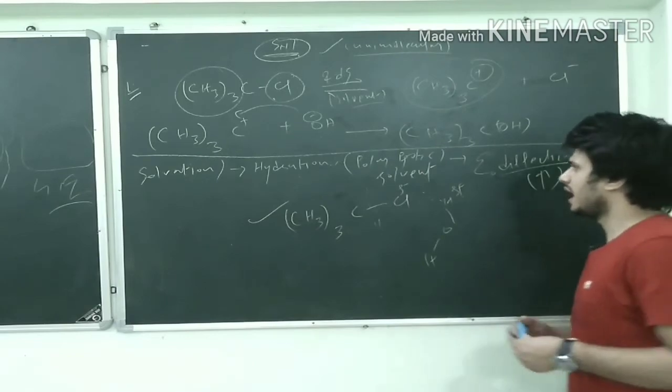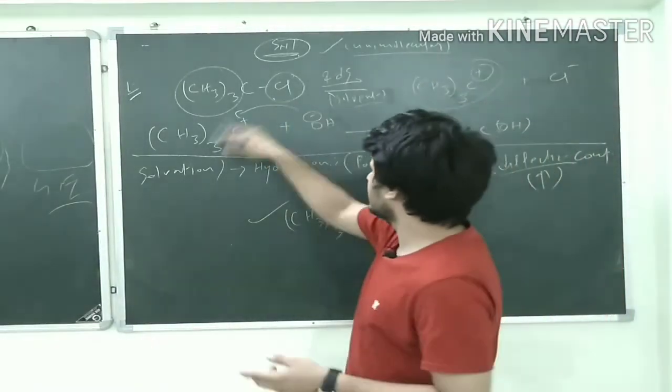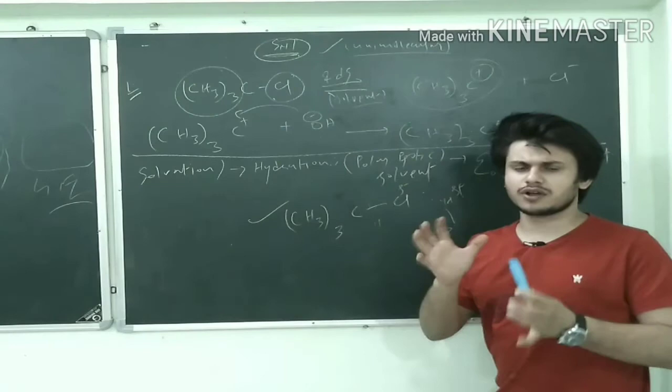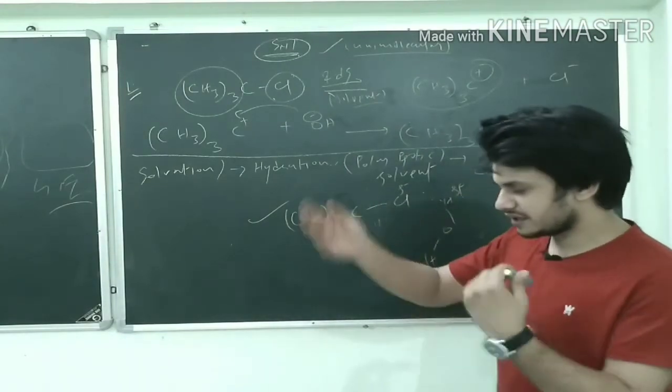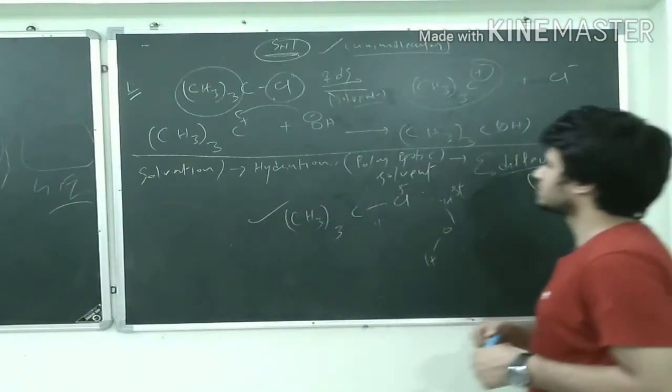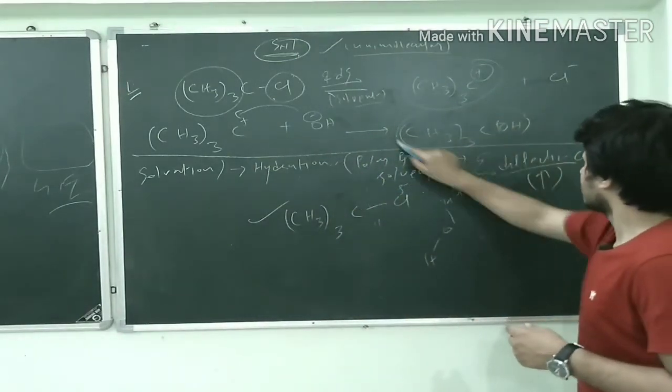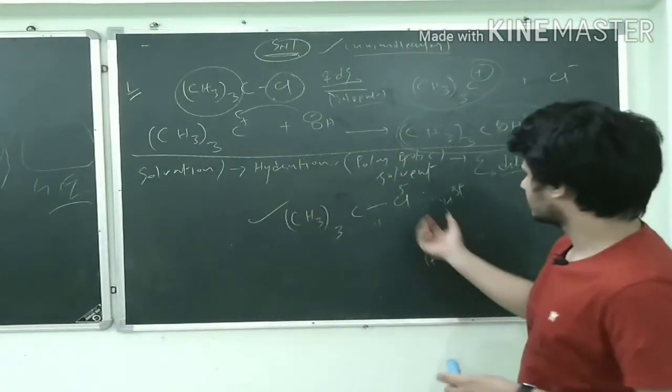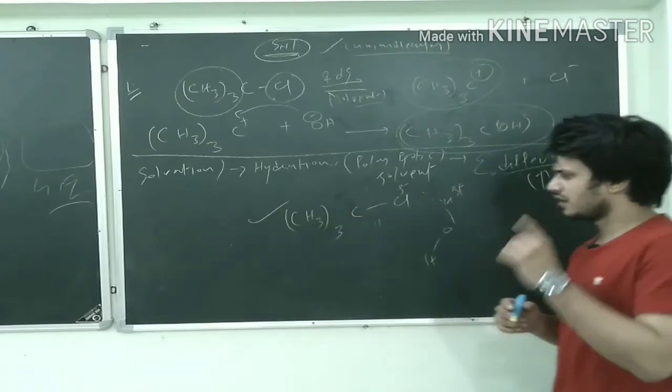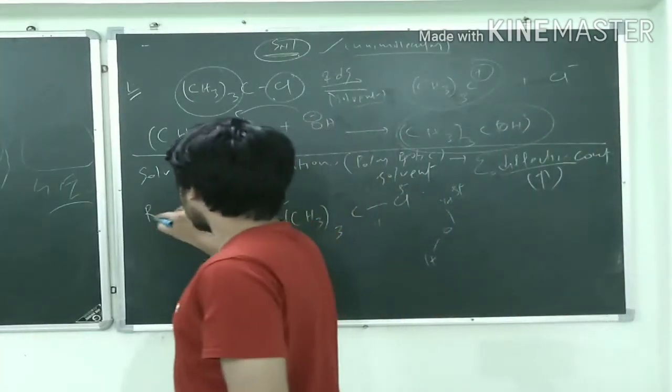And to this carbocation you can add nucleophile. I am not going to discuss the stereochemistry of this reaction, that I will discuss later in my next videos. So OH- is getting attack over there and formation of this. This is how it is solvated.